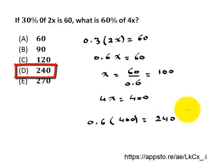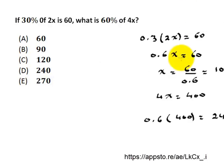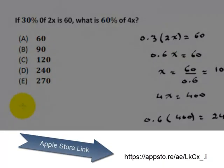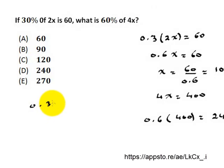Now look at how many steps it takes and how much time it takes to find the answer. Let's put this aside and show how to solve it in another way. Let's translate this to an equation: 30%, which is 0.3, of 2x is equal to 60.